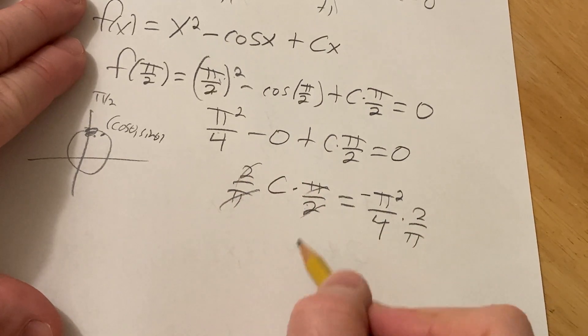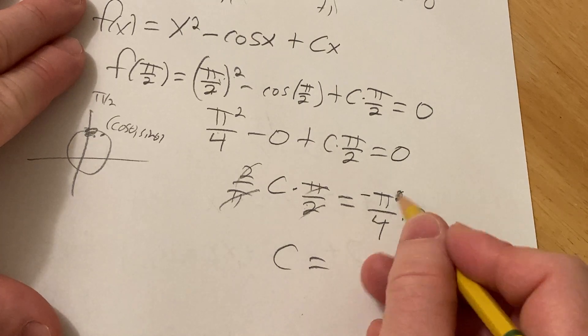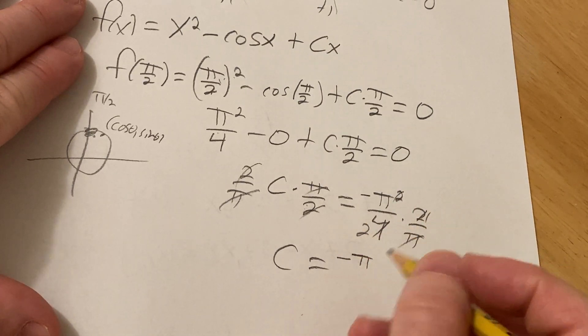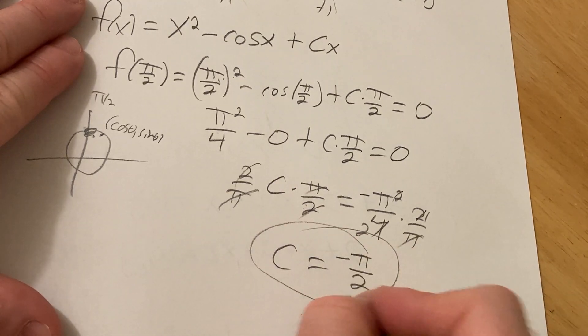C is equal to... You lose a pi here. So, we get negative pi. 2 goes into 4 twice. You get negative pi over 2. That's our c.